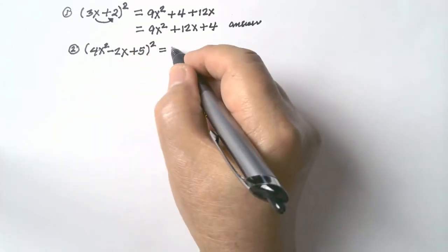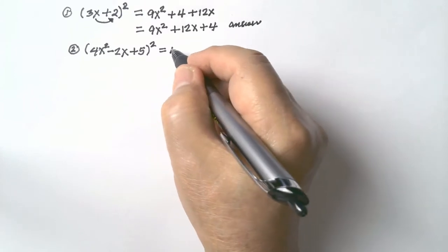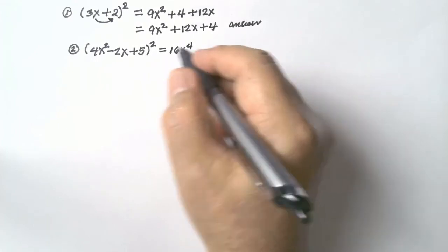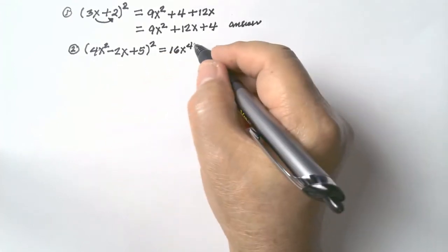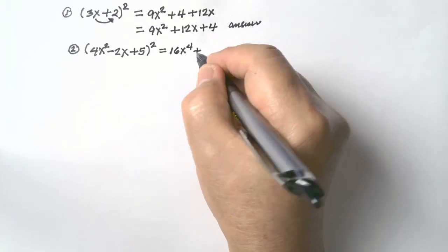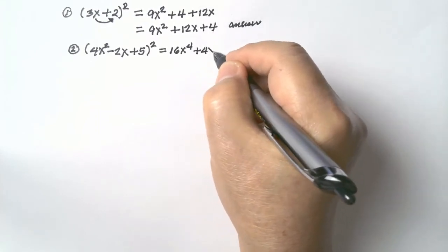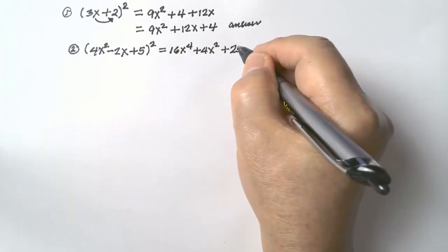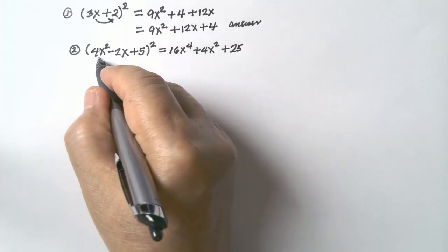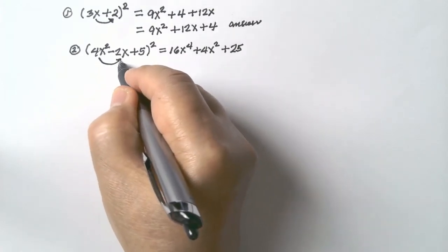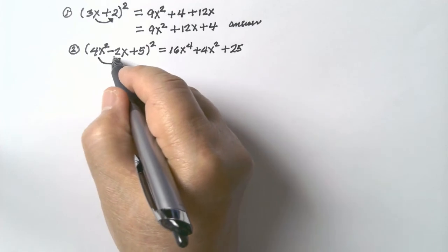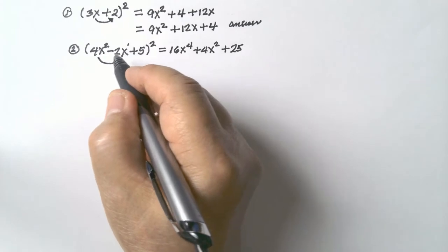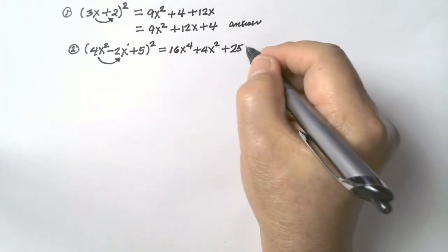Let's do that. Square the first term: 4x squared times 4x squared = 16x to the exponent of 4. Square the second term: negative 2x times negative 2x = positive 4x squared. Square the third term: 5 squared = 25. Multiply the first term by the second: that gives negative 8x cubed, because exponents 2 plus 1 equals 3. Then multiply by 2.